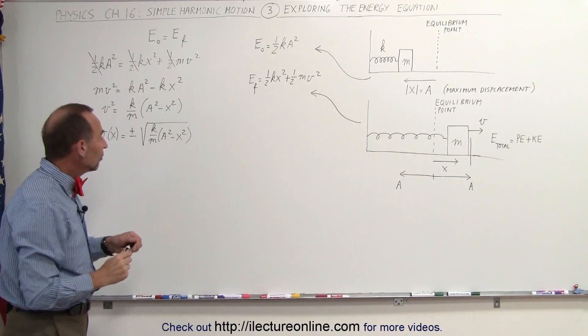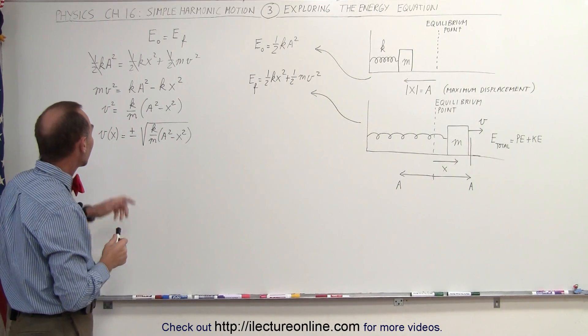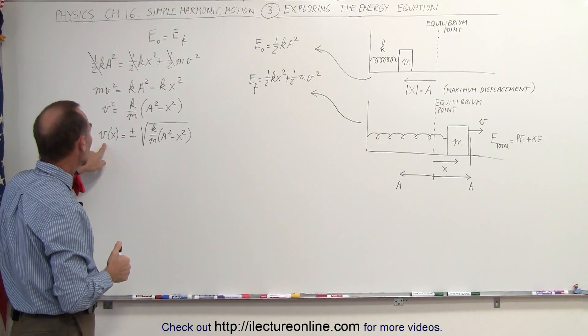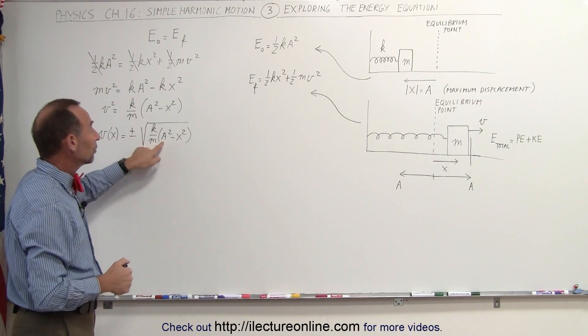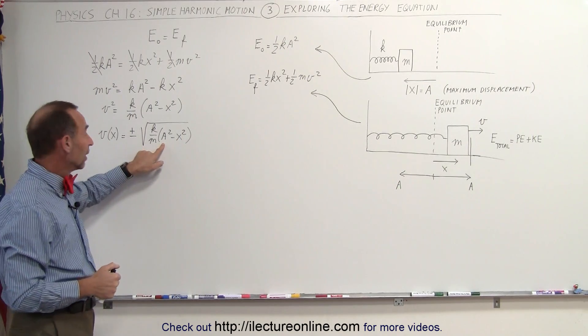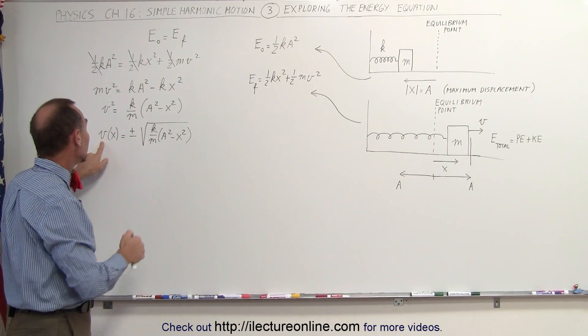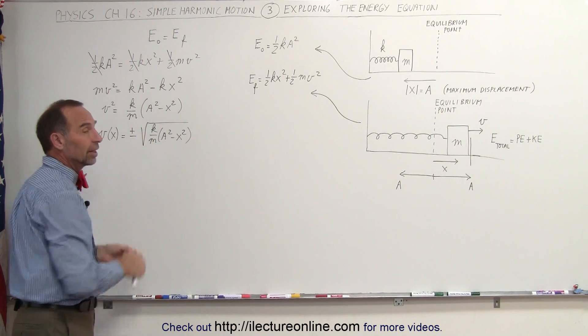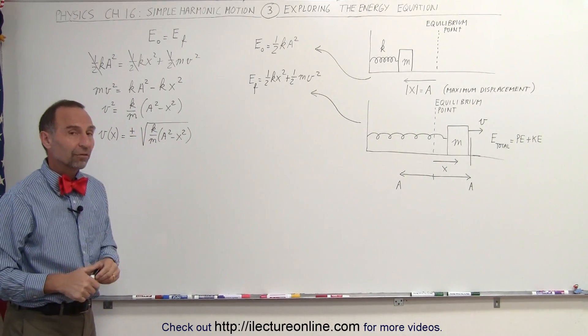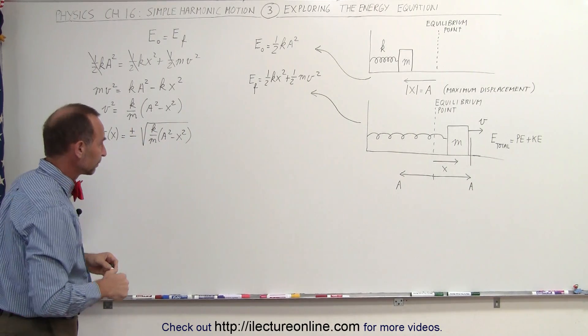When you look at this equation, you can see that the velocity will be zero when x equals A. The velocity will be a maximum value when x becomes zero. And then you can calculate what that velocity would be.